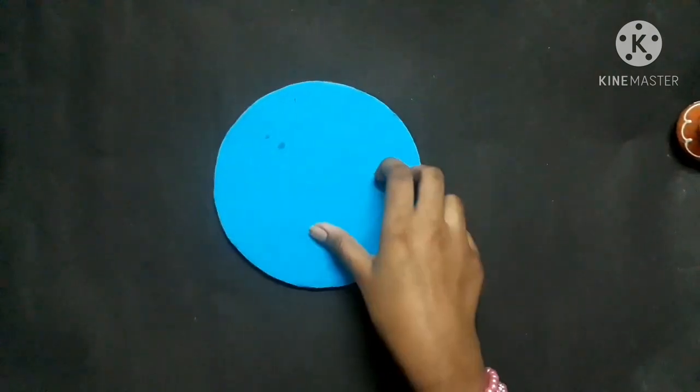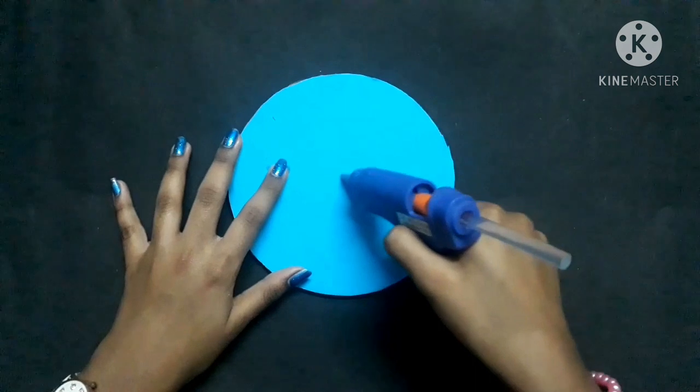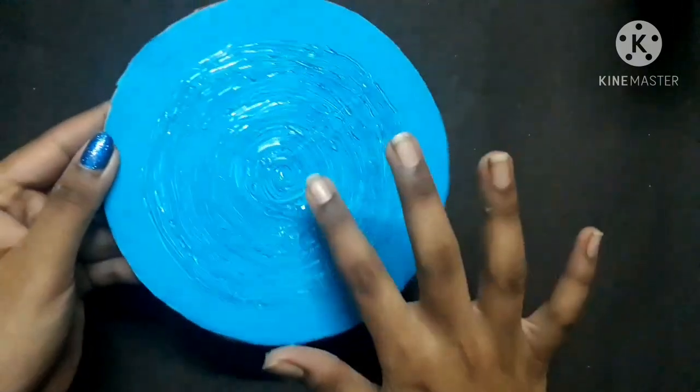Stick the blue color paper to the circular cardboard. Now make some two circles with hot glue gun in this way.